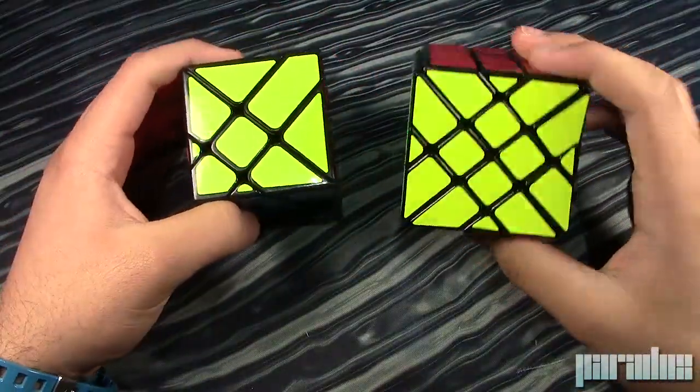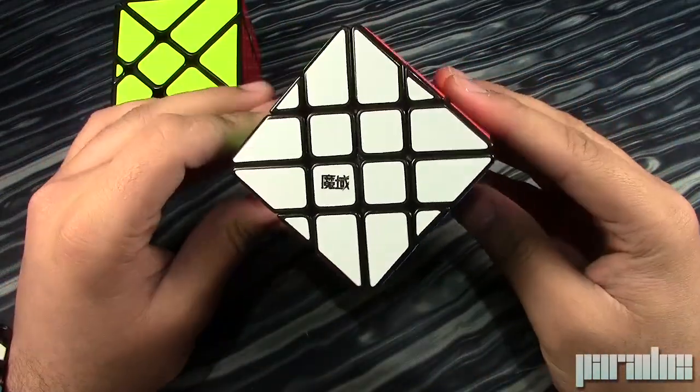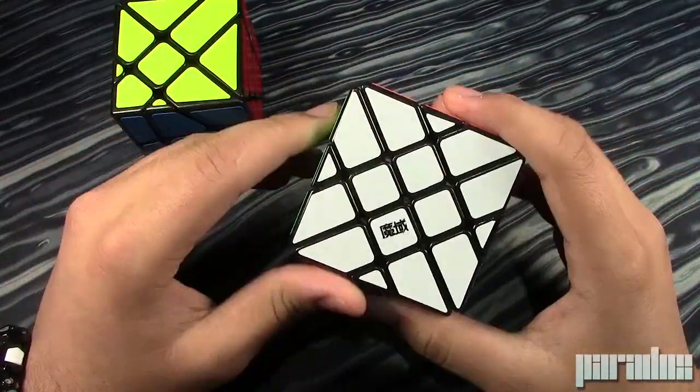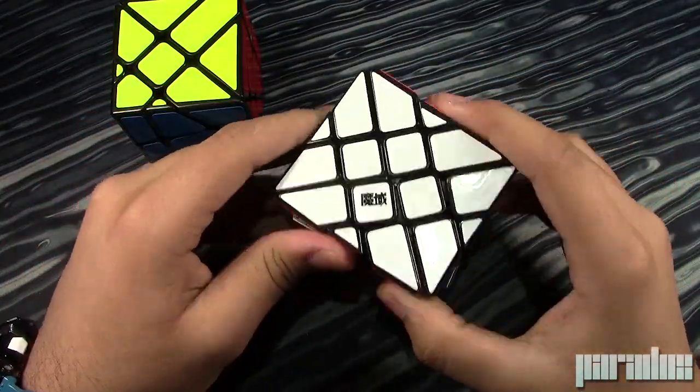A couple weeks back, Moyu released the Aosu Yilang. It's this one. It's a 4x4 Fisher cube, and it's made out of an Aosu, which is why it's called the Aosu Yilang.